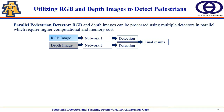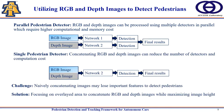There are different approaches to fusing information from multimodal sensors. One approach is a parallel pedestrian detector where RGB and depth images are processed using multiple detectors in parallel, which requires high computational and memory cost. Another approach uses only one detector, where RGB and depth images are concatenated to reduce computational cost.